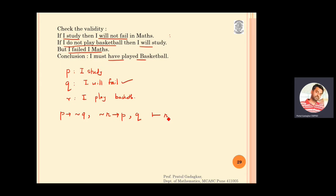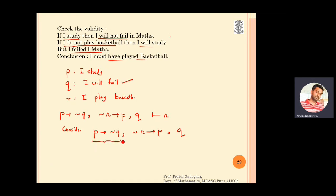To check whether this argument is valid, I consider the three given statements: p implies negation q, negation r implies p, and q. I will now simplify them by taking the contrapositive of the first statement. The contrapositive of p implies negation q gives us q implies negation p. The second statement, negation r implies p, and q are kept as they are.